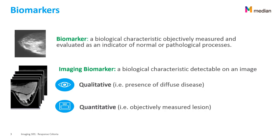An imaging biomarker is a biological characteristic detectable on an image. There are two types of imaging biomarker. An imaging biomarker can be qualitative — for example, the presence of diffuse disease. Is there presence of diffuse disease? The answer is yes or no. An imaging biomarker can also be quantitative, which means the reporting of this biomarker will be a number — for example, 5 mm or 10 mm diameter of a tumor.